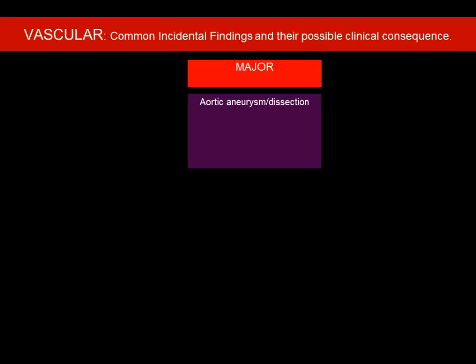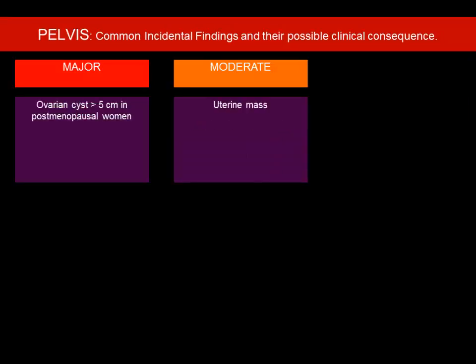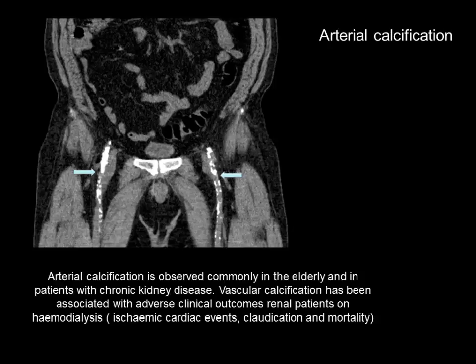Vascularly, aortic aneurysm is the most important and you need to inform the clinical team. For the spleen, massive splenomegaly should be called; splenic calcification is of uncertain significance and often not mentioned. Over 5 to 6 years of experience you build confidence in what to call and what not to call. In the pelvis, an ovarian mass more than 5 centimeters in a postmenopausal woman must be mentioned. Fibroids and uterine masses can be mentioned, though most will have had ultrasound previously. Vascular calcifications are of uncertain significance, but may have impact regarding cardiac events, claudication, and mortality.